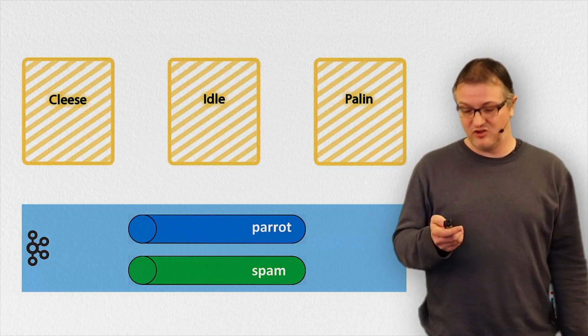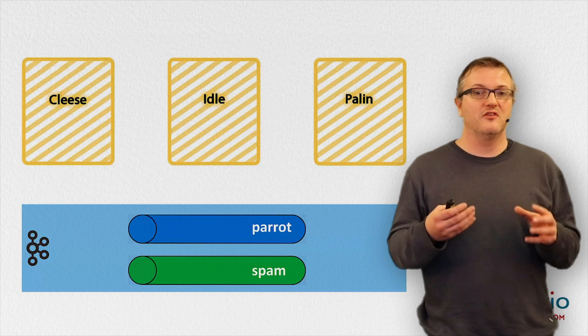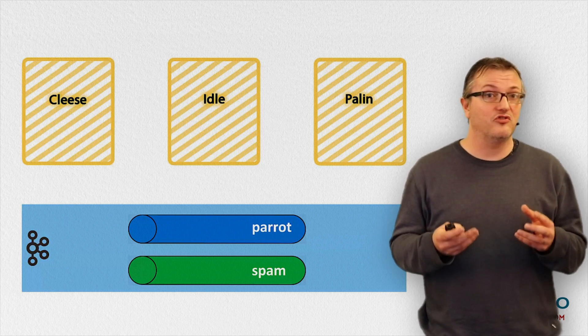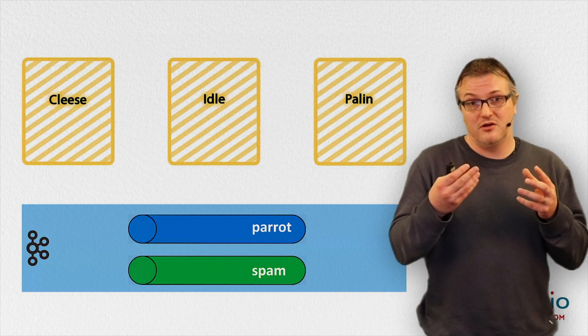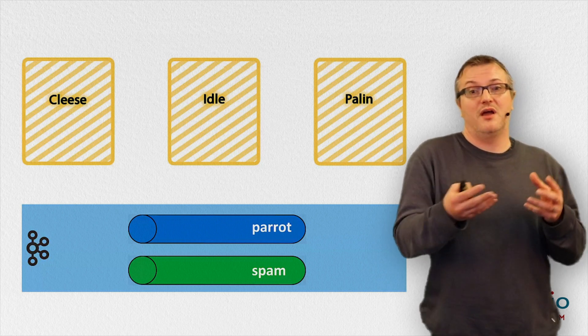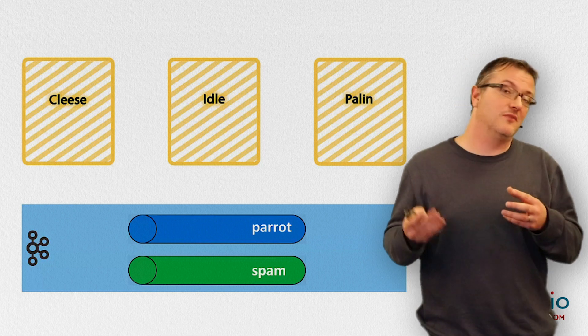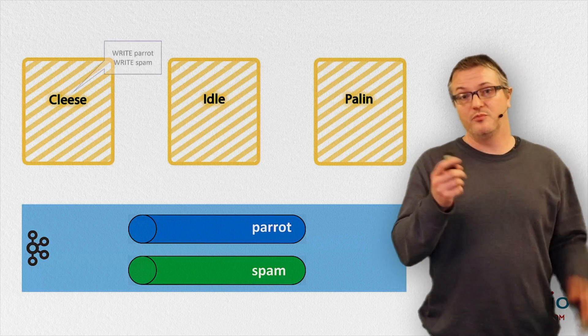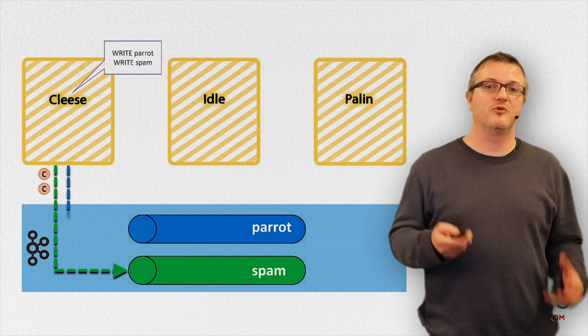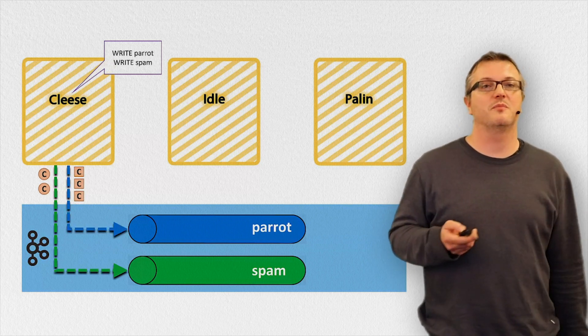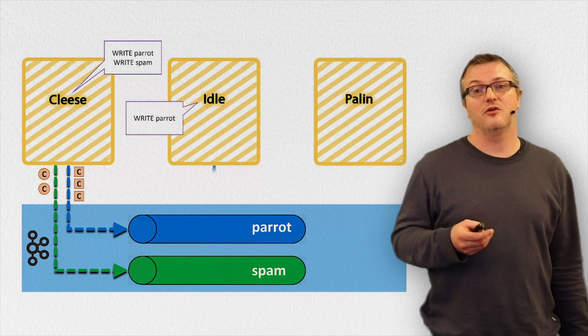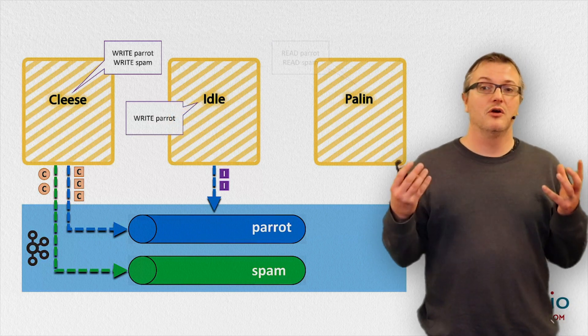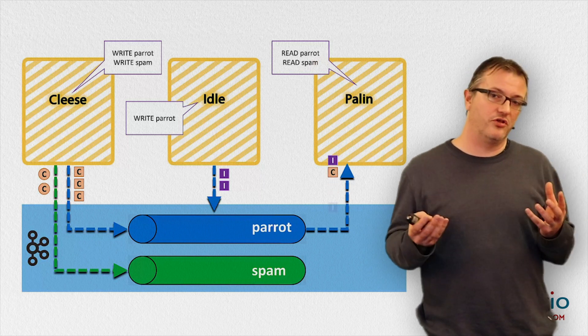The case in DSH is really that those tenants can cooperate in providing data for a data stream, and that data provided by one tenant on a data stream can be consumed by other tenants on that same stream. For example, here we have the tenant Cleese providing data for both the parrot and the spam streams, and tenant Idle providing data for the parrot stream, and tenant Palin consuming all the data from both streams.